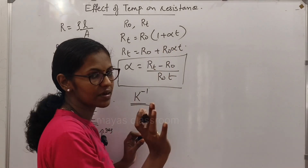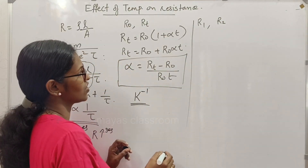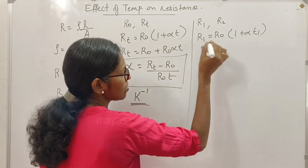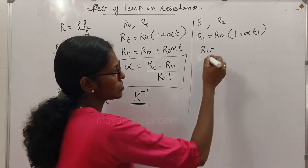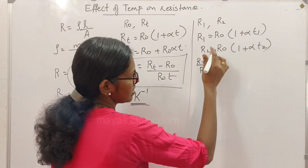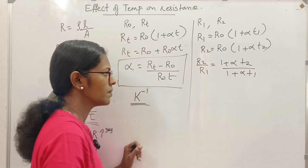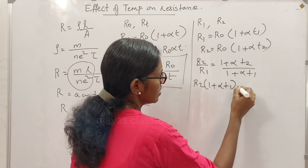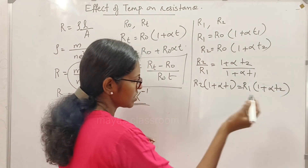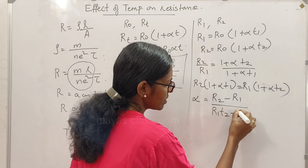Now consider two temperatures T1 and T2 with corresponding resistances R1 and R2. R1 is equal to R0 into 1 plus alpha T1, and R2 is equal to R0 into 1 plus alpha T2. Taking the ratio R2 by R1, we get 1 plus alpha T2 divided by 1 plus alpha T1. Cross multiplying, R2 into 1 plus alpha T1 is equal to R1 into 1 plus alpha T2.